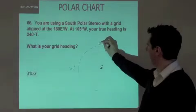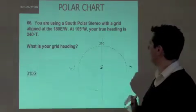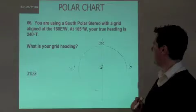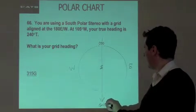We'll put the zero at the top and the grid is aligned with the anti-meridian. The anti-meridian is always down the page, so grid north is down the page.